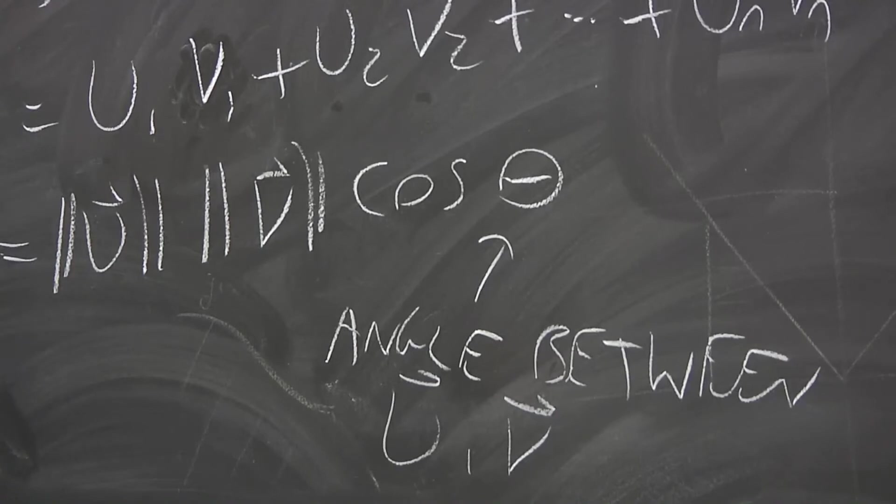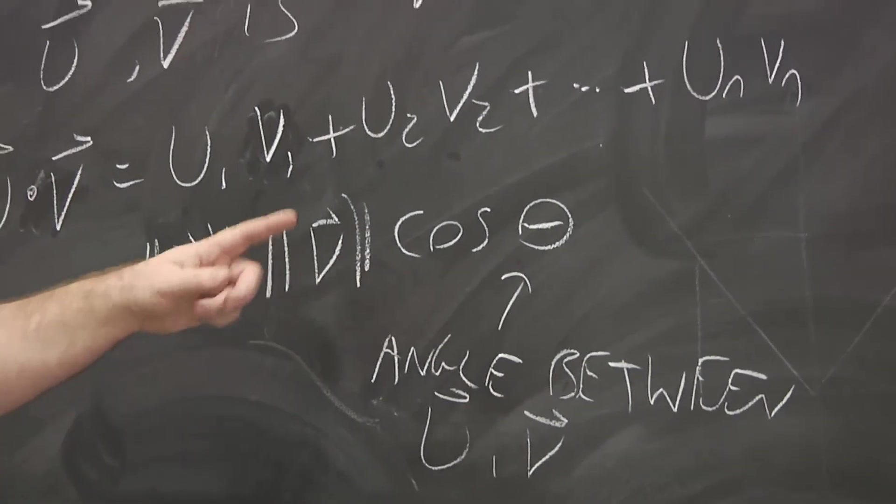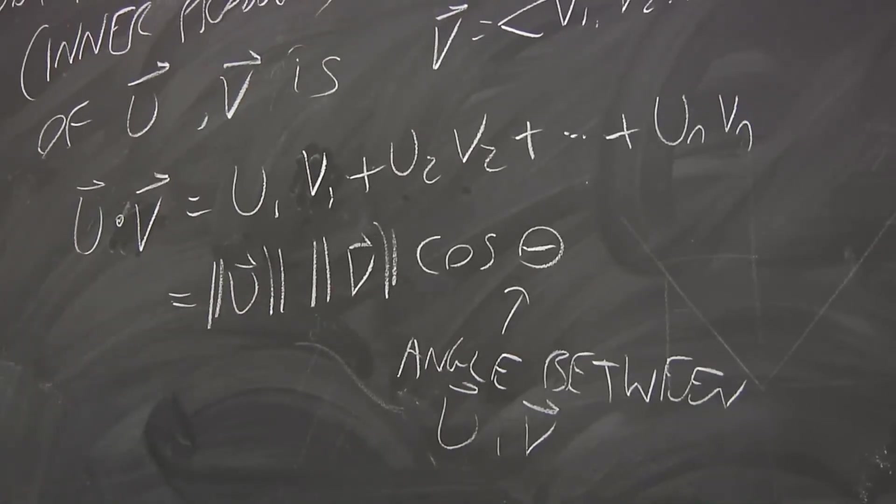And if they're perpendicular, this angle's 90 degrees, or π/2 radians, cosine of that is zero. So if a dot product is zero, the vectors are orthogonal.